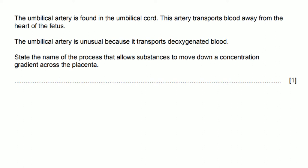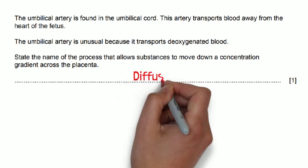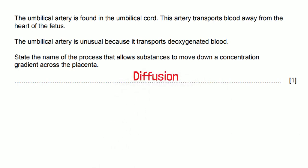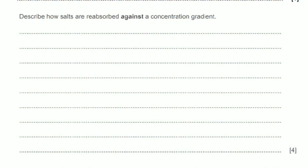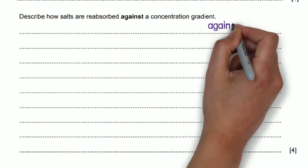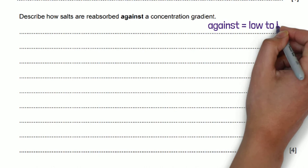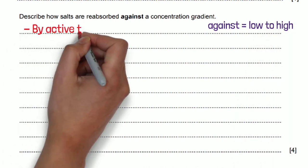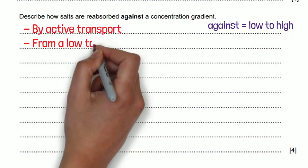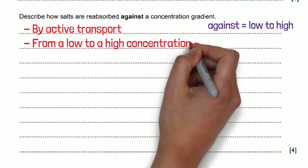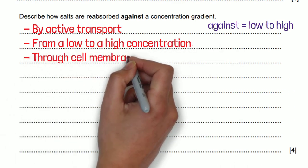The next question is asking us to describe how salts are reabsorbed against a concentration gradient. Against means from low to high concentrated areas so that means it must be by active transport. From a low to high concentrated area through a cell membrane using protein pumps or channels and then it uses energy from respiration.